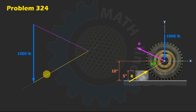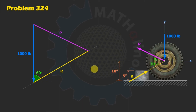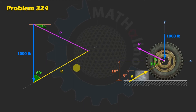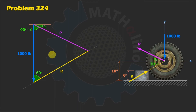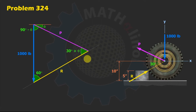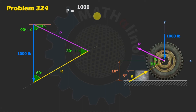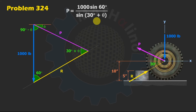Completing the force polygon: R is 30 degrees from horizontal, so from the vertical it is 60 degrees. The angle between P and R is 30 degrees plus theta. Using the sine law: P over sine 30 equals 1,000 over sine(30 + theta). Therefore P equals 1,000 times sine 60 divided by sine(30 + theta).